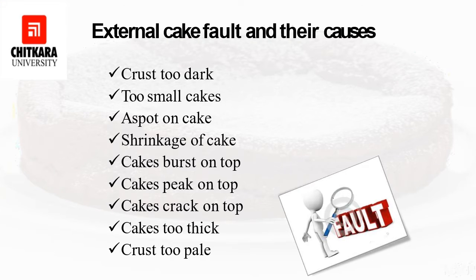The first external cake fault is crust too dark. This means you have used too much sugar, which leads to a dark crust. Second, the temperature of your oven is too hot, darkening the color of your cake. A high quantity of liquid can also lead to this dark color.